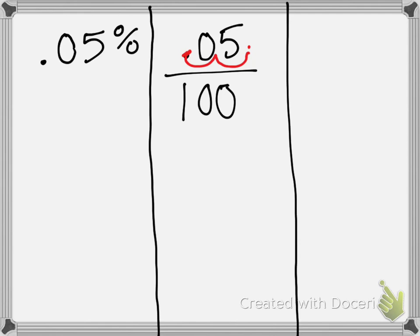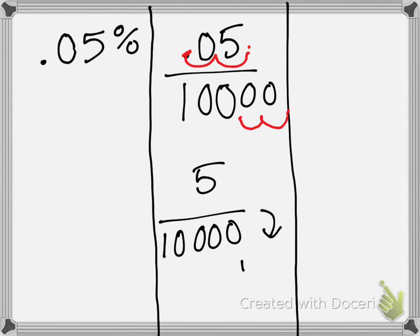But what we do to the top, we do to the bottom. So we move it over 1, 2. In which case, we then get 5 over 10,000. In the same scenario, we do have to simplify it again, which would give us 1 over 2,000.